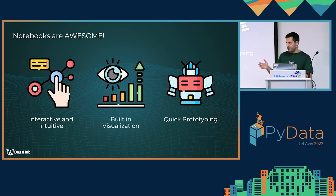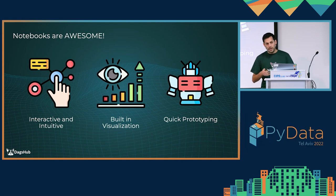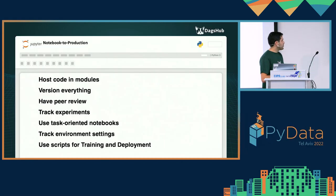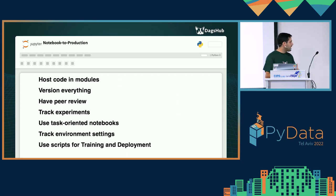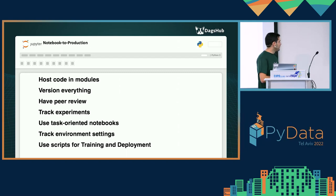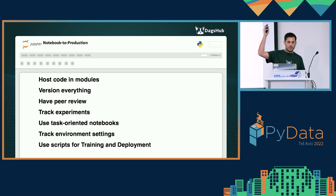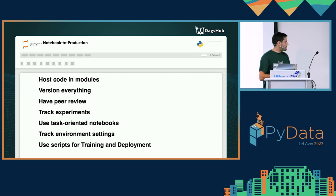Now that we understand notebooks are good but also have their dark side, how can we utilize them more productively in a production environment? Based on our research, seven best practices will make the research-to-production time shorter: host code in modules, version everything — code, data, models, experiments — have peer reviews, track experiments, use task-oriented notebooks, track environment settings, and use scripts for training and deployment.